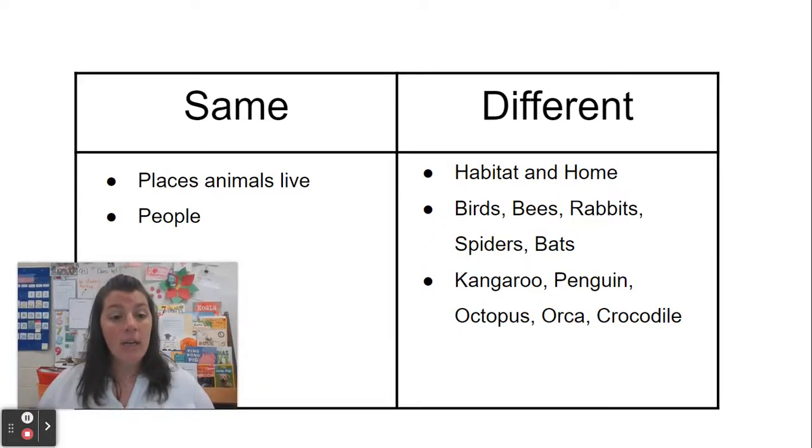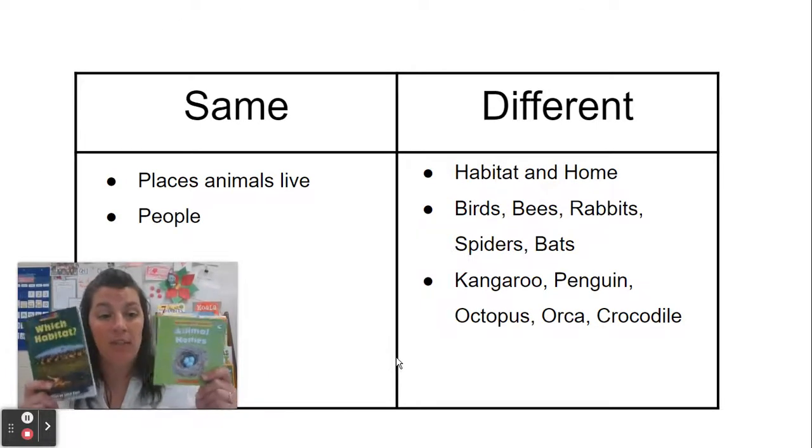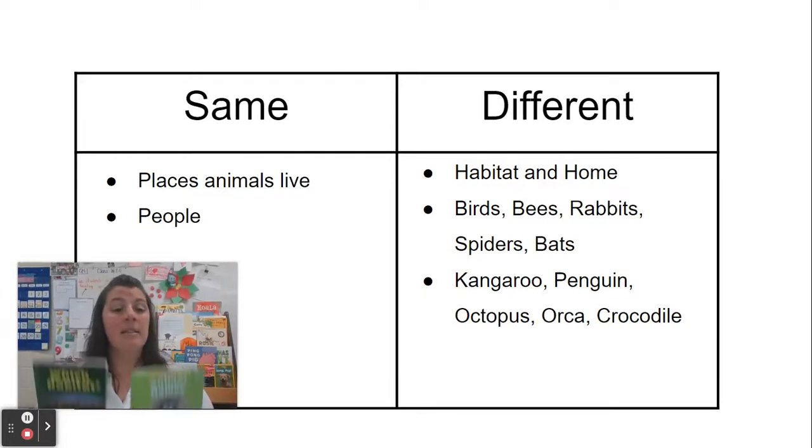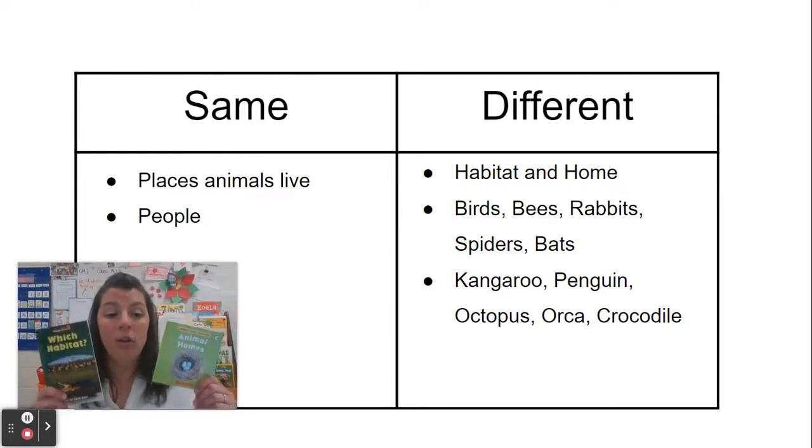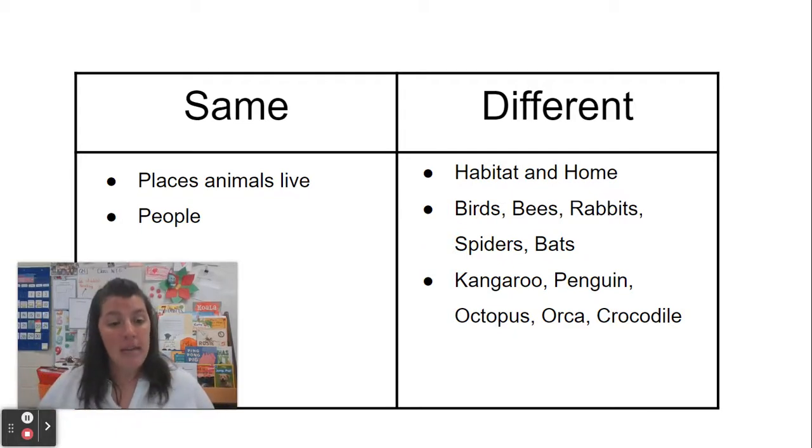So, we noticed that there were two things that were the same, but there were three things that were different. When we see different books on the same topic, we can learn different things from each book. But we can also notice when things are the same.